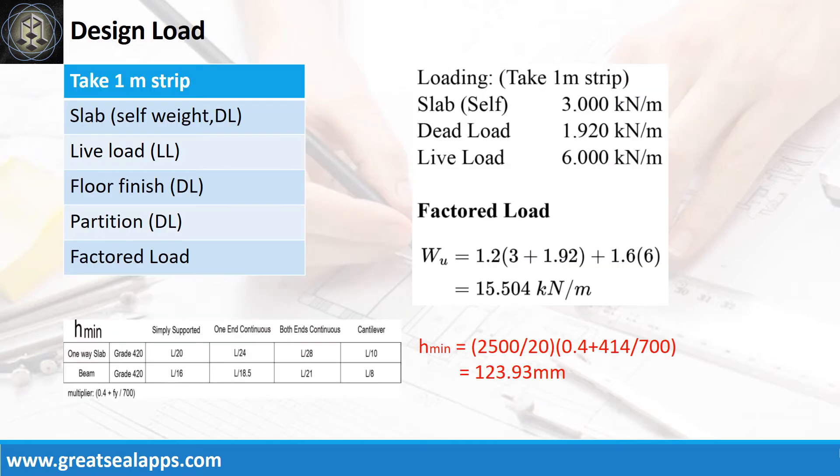The uniform load for a 125 mm thick slab is 3 kN per meter. A light manufacturing live load is 6 kN per meter. Other dead load like floor finish and partition is 1.92 kN per meter for a factored load of 15.504 kN per meter.